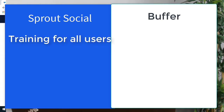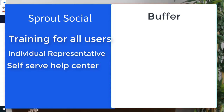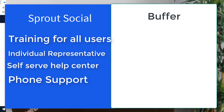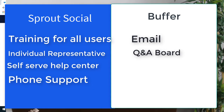Now let's look at support, because it's always important to know what kind of support you get. Sprout Social offers training for all of its users, and if you're a larger customer on one of their bigger plans, you'll be assigned a representative to tailor your training to your needs. They also have a self-serve help center with recordings and Q&A boards, plus a phone number you can call for support and technical issues. Buffer is more restricted — you can email them or go to a Q&A board, but there's no phone support. If you like a lot of support, you'd prefer Sprout Social; if you're pretty tech-savvy, Buffer would work for you.